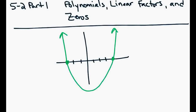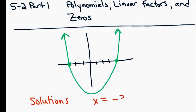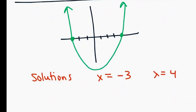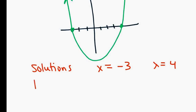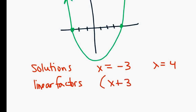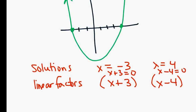When we studied quadratic equations and were doing factoring, one of the things I had you do was graph the quadratic in your calculator and look for where the parabola hit the x-axis. Those were called the solutions. So in this particular model, the solutions of the quadratic equation would be x equals negative 3 and x equals 4. Then I had you work backwards and write the factors — I'm going to call them linear factors. The factors would be x plus 3 and x minus 4, because what I'm really doing is setting this equation equal to 0 by either adding 3 or subtracting 4. That's where the linear factors came from.